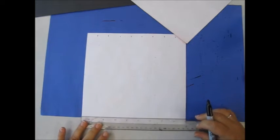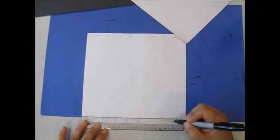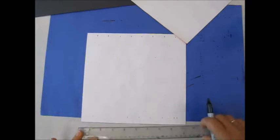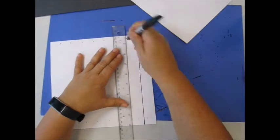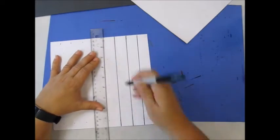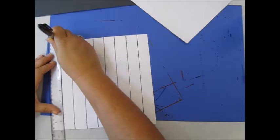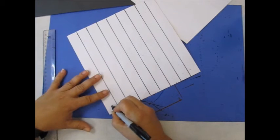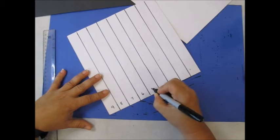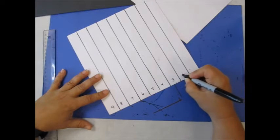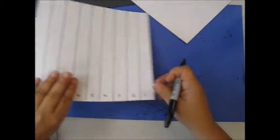I'm going to put my ruler down and I do the same thing over here. I'm going to number them backwards. 9, 8, 7, 6, 5, 4, 3, 2, 1. I do this to both designs.